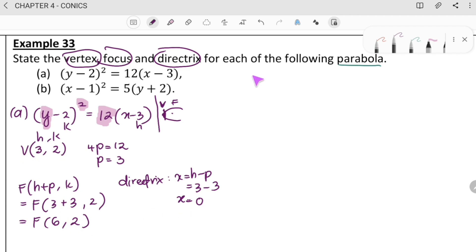So, next, we are going to do number B. Okay. B. X minus 1 squared equal to 5 Y plus 2. So, we get the clue. We have the X squared. We have positive here. It's open up. This way.